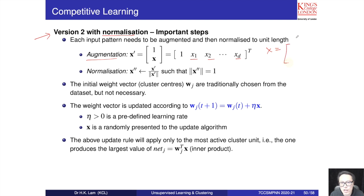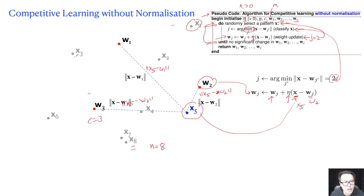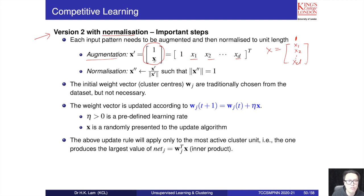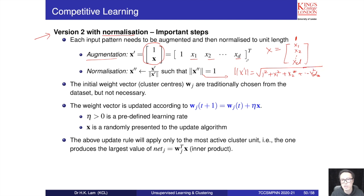The bold-face x is a vector containing features x1 to xd. For augmentation, we add a 1 at the top to insert one more element, forming x prime. Then we normalize: x prime divided by the L2 norm of x prime, where the L2 norm equals the square root of 1 squared plus x1 squared plus x2 squared up to xd squared.